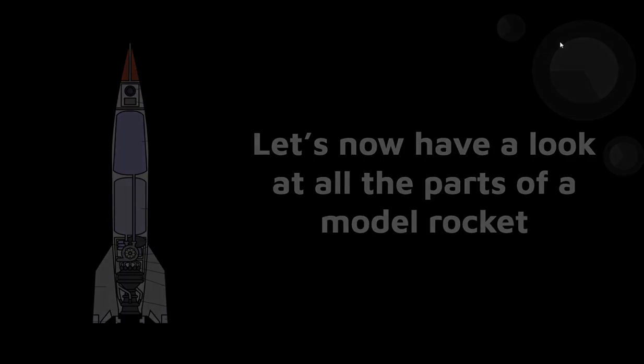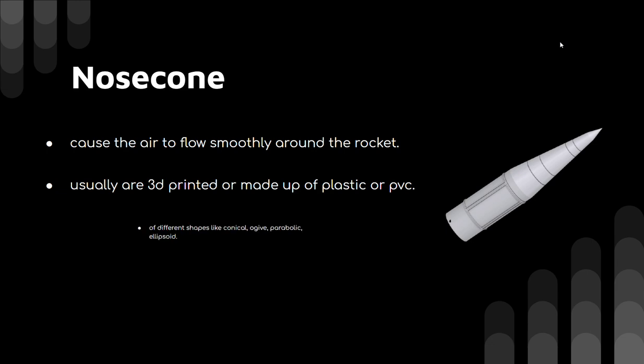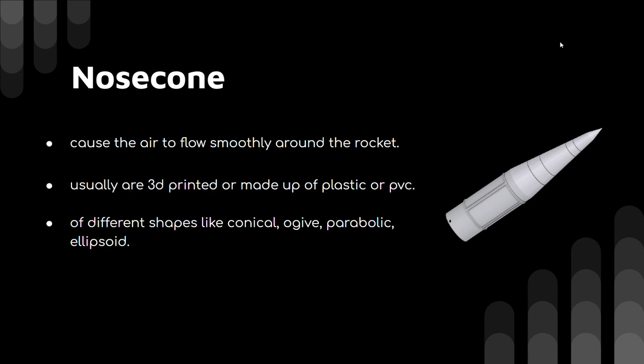Let's have a look at all the parts of a model rocket. First of all, the nose cone. The nose cone is the topmost part of a rocket which causes the air to flow smoothly around the rocket. It's designed aerodynamically to present minimum air resistance while the rocket is propelling itself up. Nose cones are usually 3D printed or made out of plastic or PVC. Balsa wood can also be used, but generally plastic or PVC is preferred so that it can be reused for different launches.